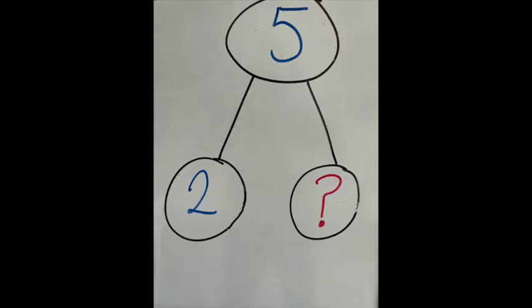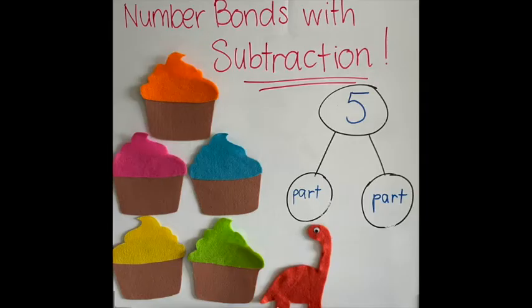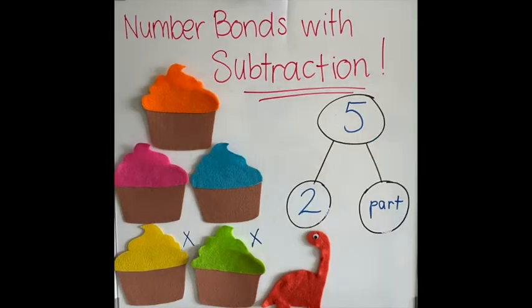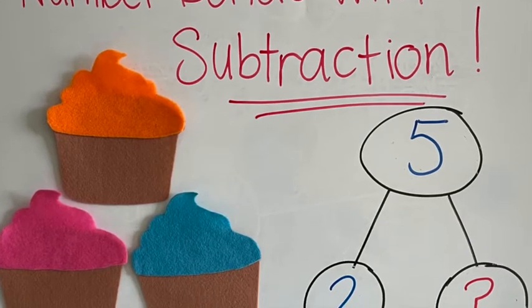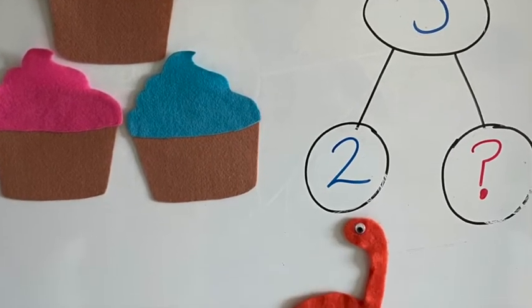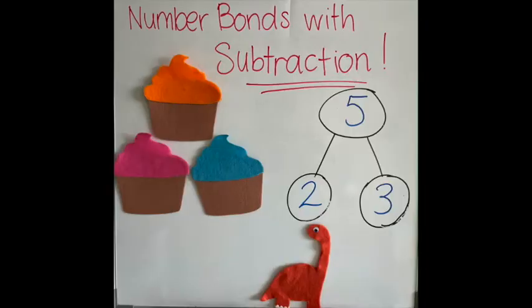Let's find that missing part by taking away. So we started off with five cupcakes and then two got eaten up. Now that's left us with three cupcakes, so three is the other part of the number bond.